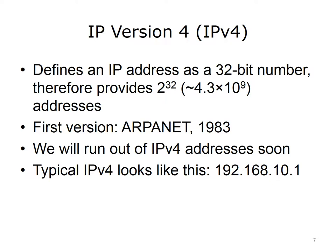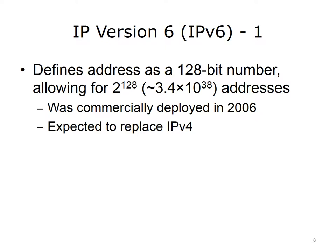An example of an IPv4 address would be 192.168.10.1. IP version 6 or IPv6 was designed to address the limitations of IPv4. Its addresses are 128-bit, which means that theoretically it can provide 2 to the power of 128, or approximately 3.4 times 10 to the power of 38 addresses. IPv6 was commercially deployed in 2006 and many institutions have migrated to it. It is expected to eventually replace all IPv4 addresses.